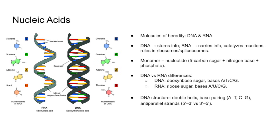DNA contains deoxyribose, while RNA has ribose. Their nitrogenous bases also differ. DNA contains adenine (A), thymine (T), cytosine (C), and guanine (G), while RNA has the same adenine, cytosine, and guanine, but thymine is replaced with uracil. DNA is famously double-stranded, forming a double helix. The two strands are held together by hydrogen bonds between complementary bases — A pairs with T, and C pairs with G.